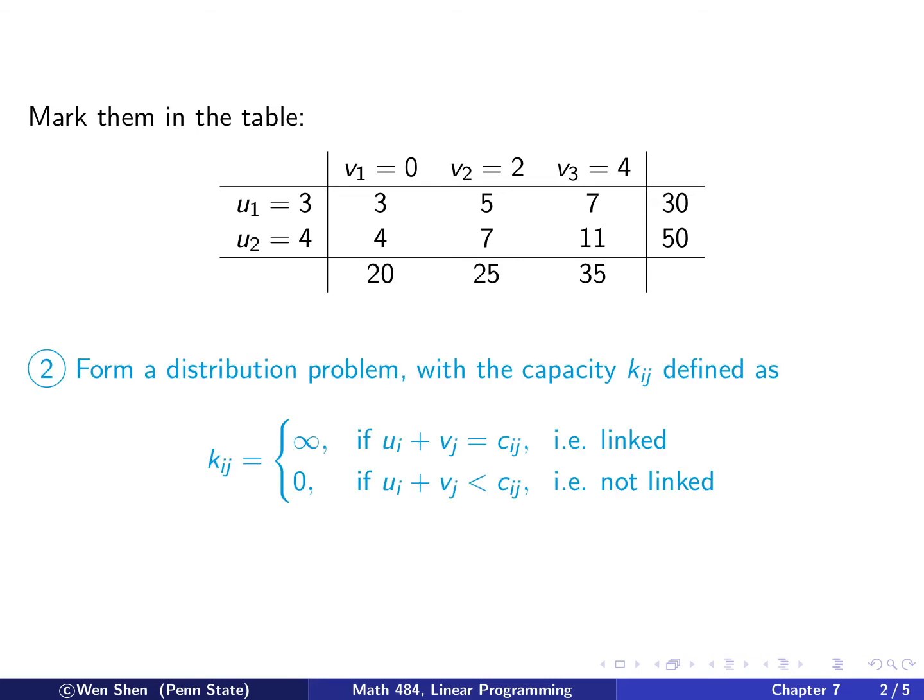Now let's look at step 2. For step 2, we will now form a distribution problem. The distribution problem will have the capacity kij defined as follows. So kij will equal either to infinity or to 0, following this rule. If the ui plus vj is exactly equal to cij, then I put the capacity to be infinite.